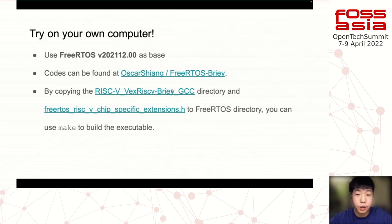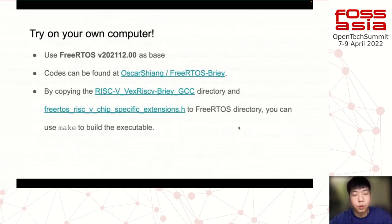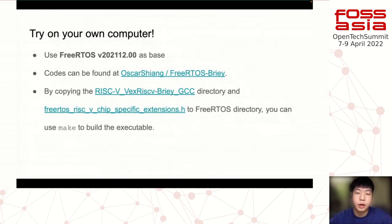The instructions are to copy the directory and the specific port extension into the FreeRTOS directory, then use GNU Make to build the executable. After that you can start the simulation and connect with GDB to test FreeRTOS on your own computer.